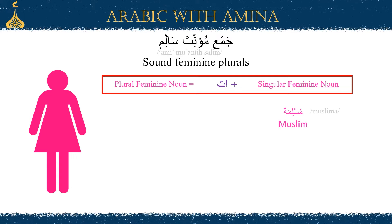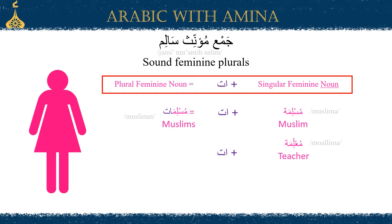Let's start with a few examples. First, the word muslimah, which refers to a female Muslim. We apply the rule of adding alif ta to the end, making the word muslimat. Notice that the ta marbootah of the word is omitted and instead only alif ta is added — so this last letter is removed. Another word: mu'allima, which is female teacher — adding alif ta gives us mu'allimat, female teachers. A last example: la'iba, player — add the alif ta, and we get la'ibat.